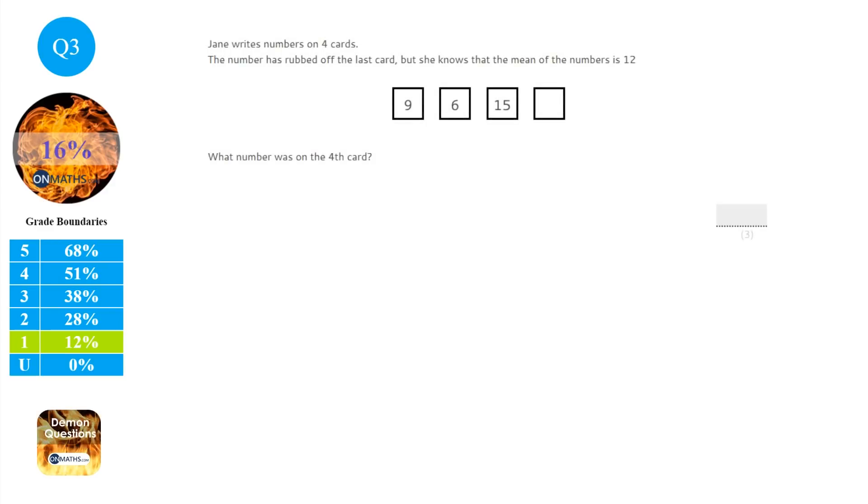Okay, so for this question, we've basically got the mean of the numbers. We know what three of them are, but we don't know what the fourth one is because the number's rubbed off. Okay, so first thing for this question is think about how you would work out the mean. You'd work out the mean by adding these numbers together and then getting the answer and dividing by the amount of numbers we've got, which is 4. And we know that equals 12. So if I put an algebra letter in, let's call it x, then I can write that down. So 9 plus 6 plus 15 plus x, which is our unknown, divided by 4 equals 12.